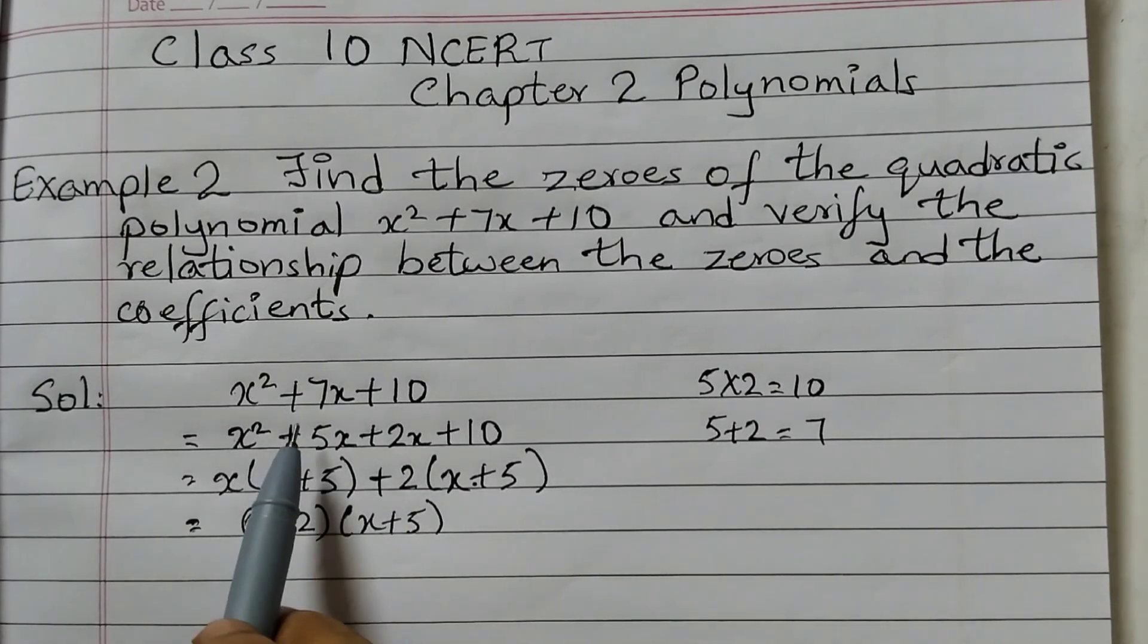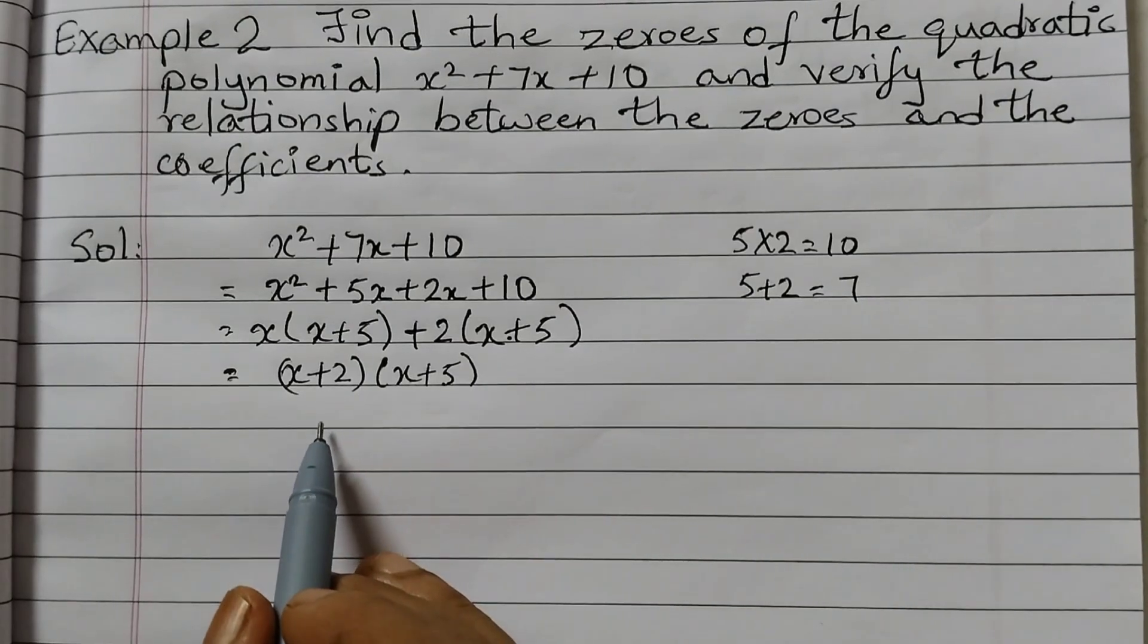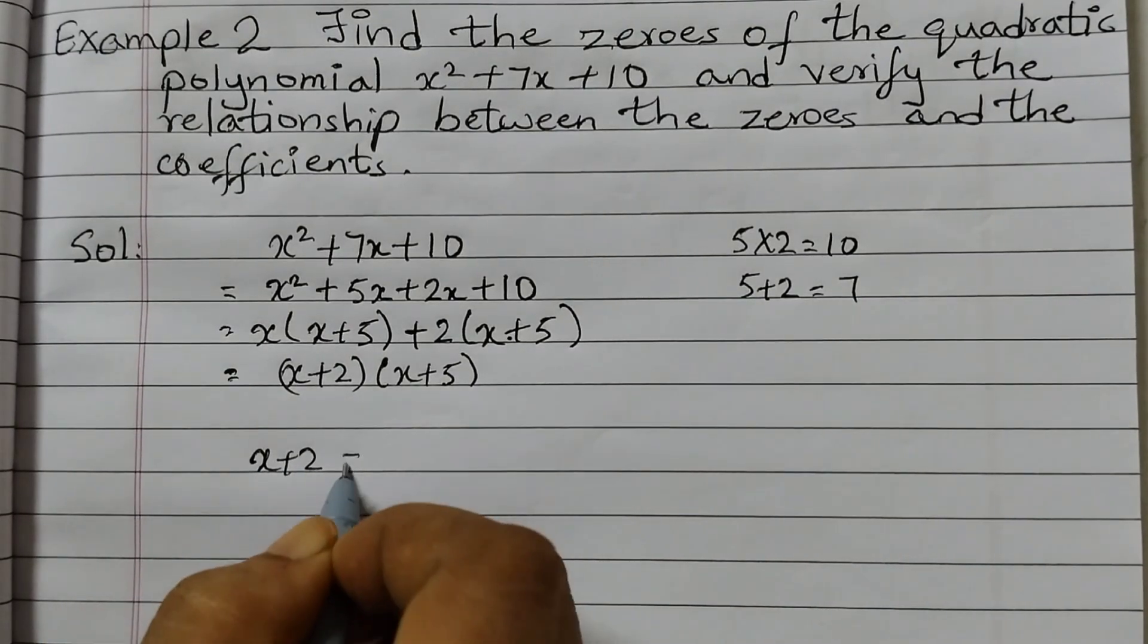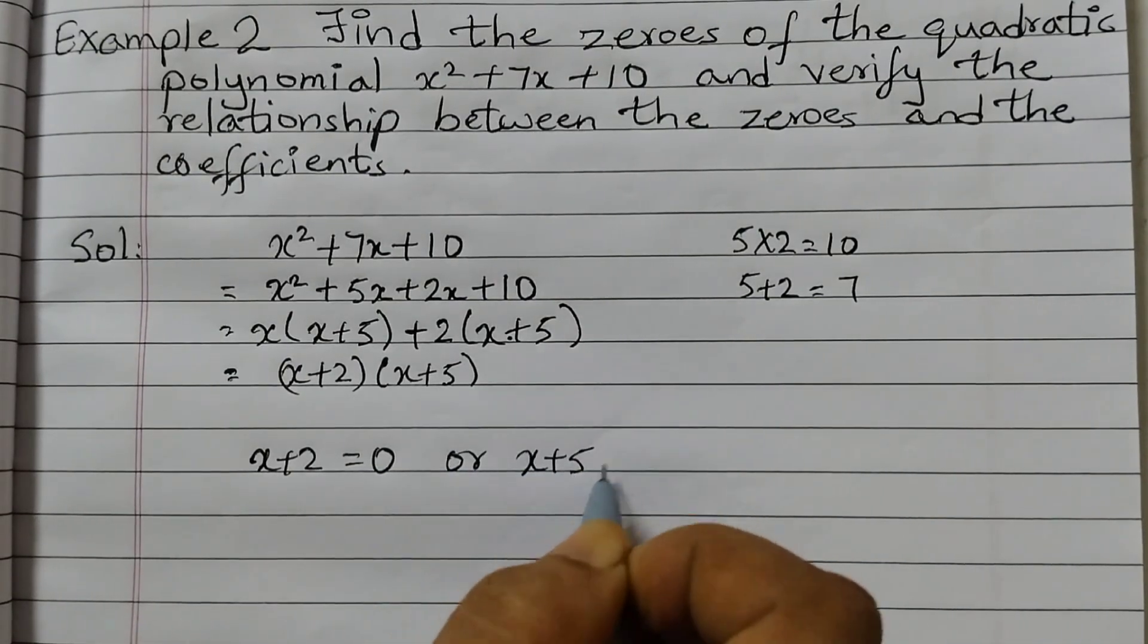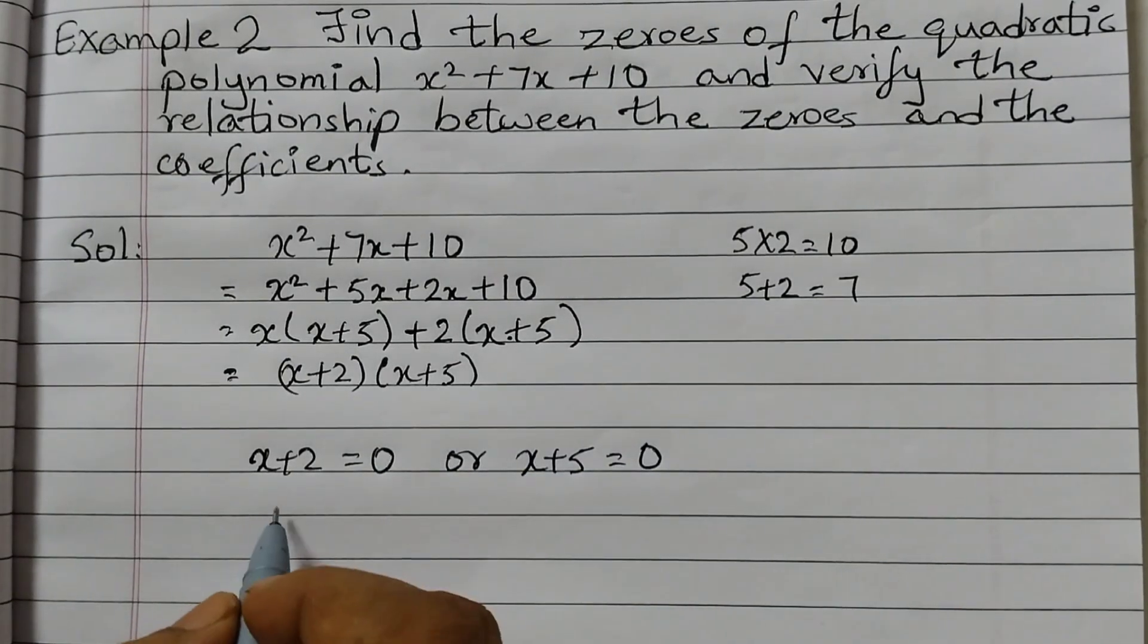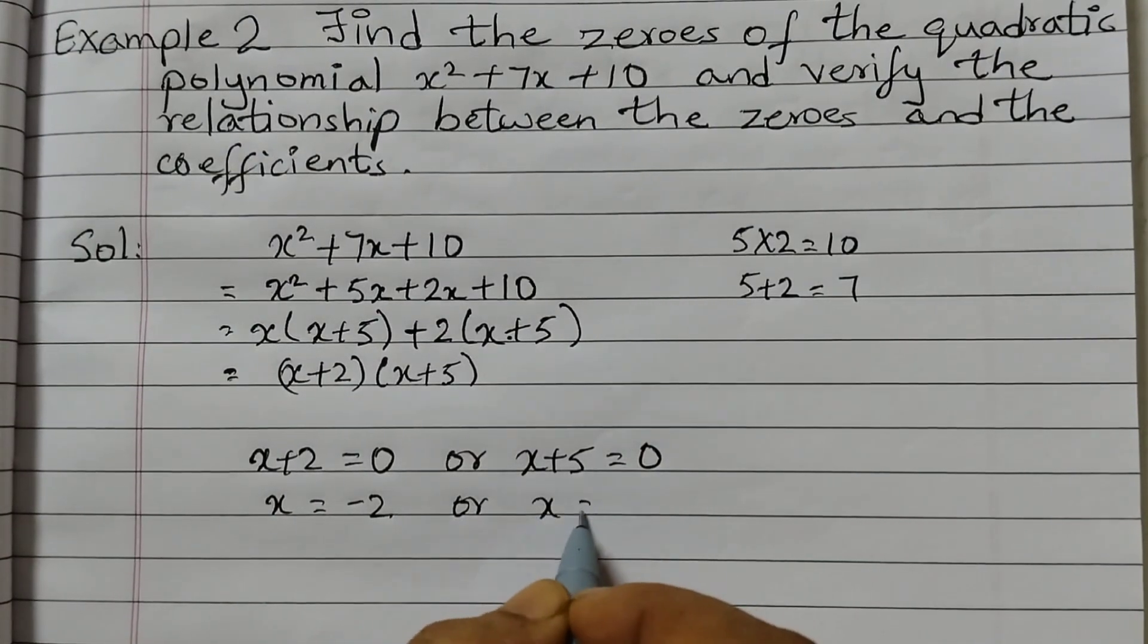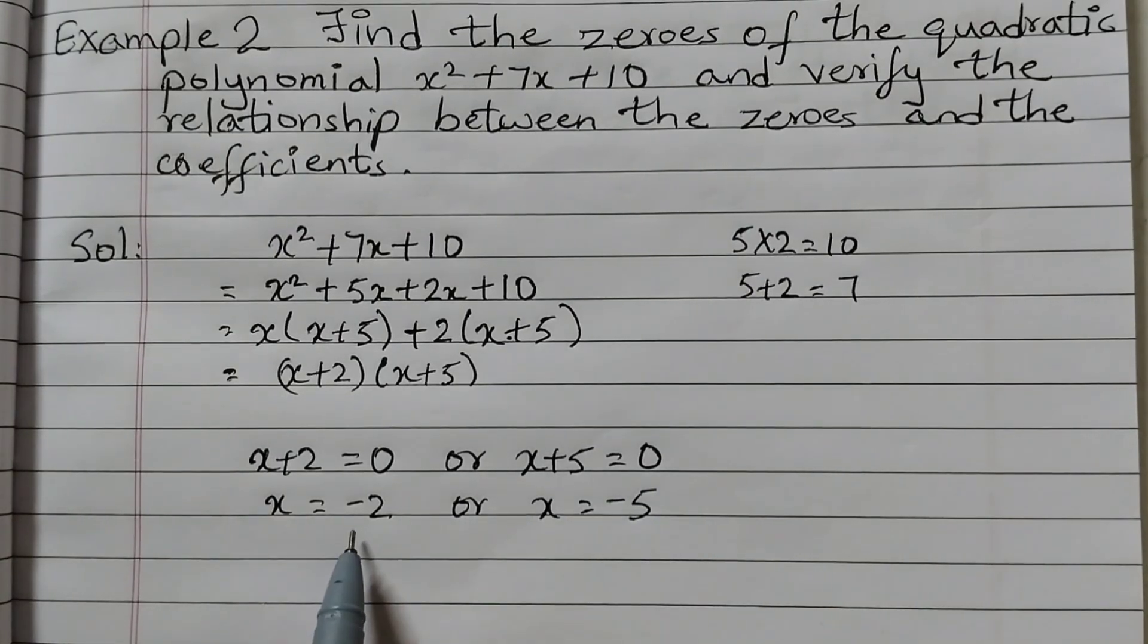Now these are the factors of this given polynomial. To find out the zeros we need to equate it to 0. So x plus 2 is equal to 0 or x plus 5 is equal to 0. X is equal to minus 2 or x is equal to minus 5. So these are the two zeros of the polynomial.